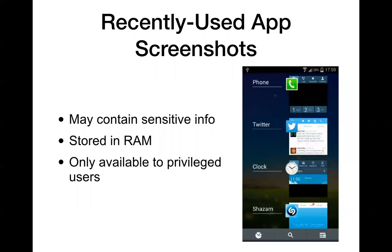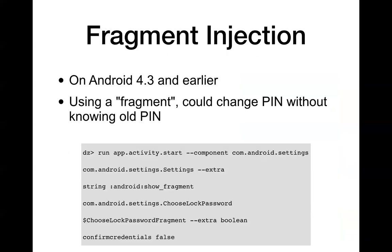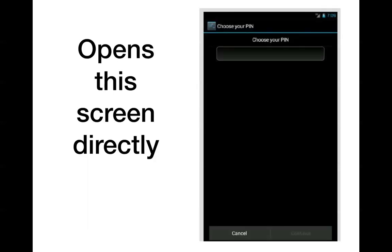Recently used app screenshots — true of both Android and iPhone — they have screenshots to shrink things down, and those might have a picture of your screen with a password on it. Most apps put dots instead of passwords to prevent this. There was a thing called fragment injection where you could change the PIN of a phone without knowing the old PIN — a common attack. There's a way to change a password without knowing the old one; that came up on Facebook about two years ago. You jump directly to the 'new pin' page without passing through the page asking for the old PIN.